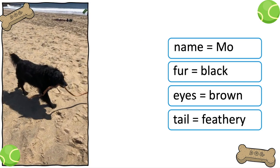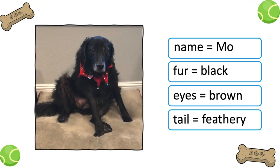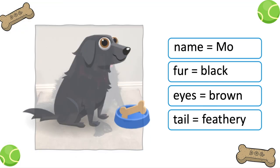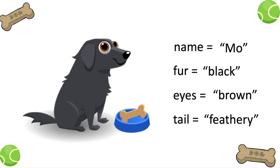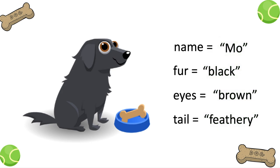Now let's say you wanted to turn Mo into a character for a video game. All of these values that describe Mo need to be written out in the code, like this. Each value is represented with a string of letters, so we call it a string.